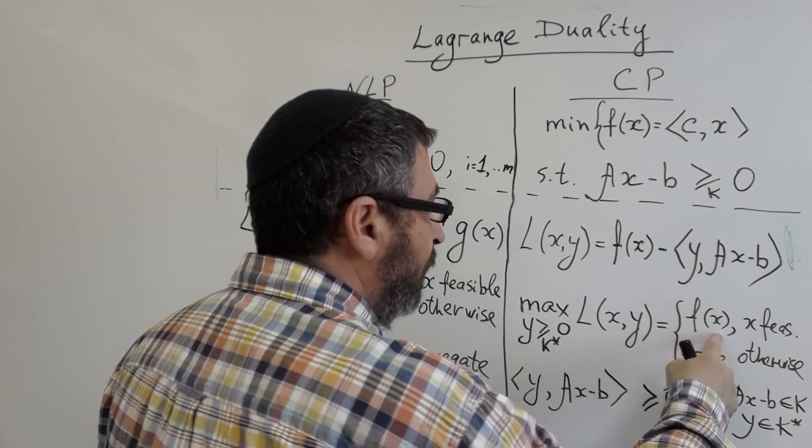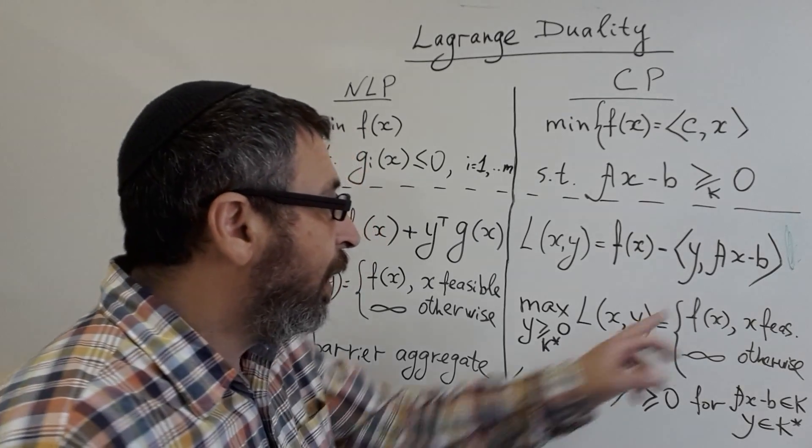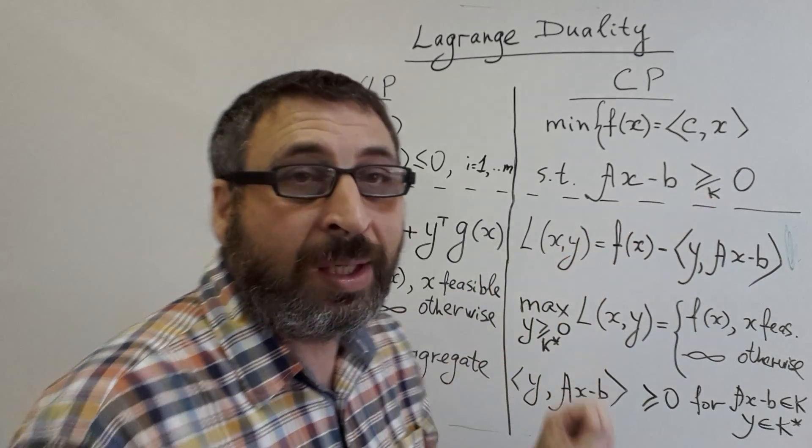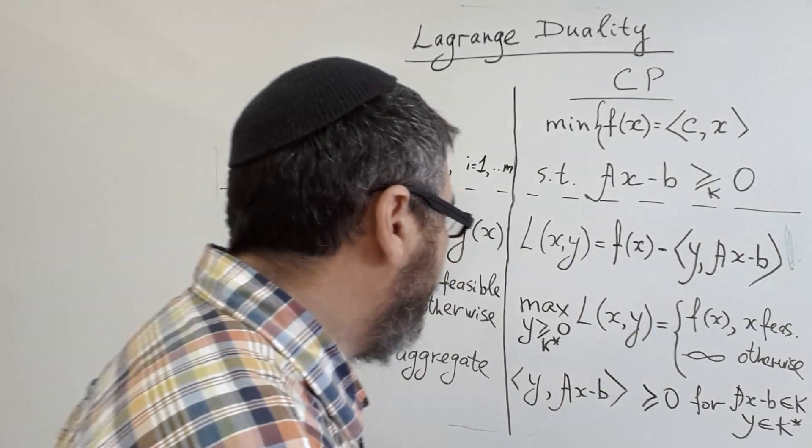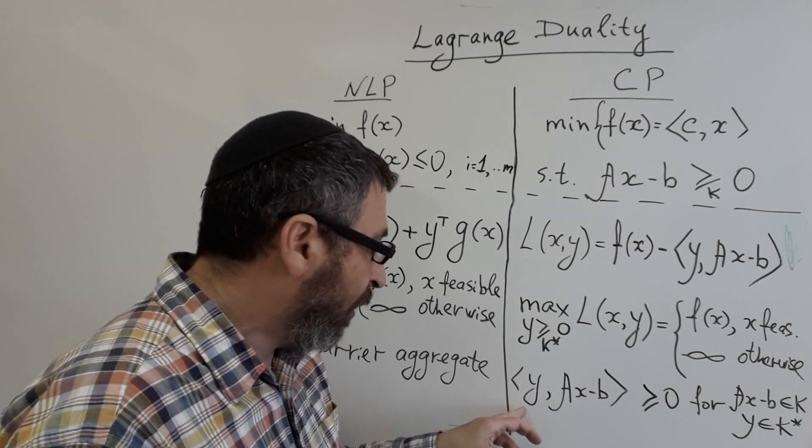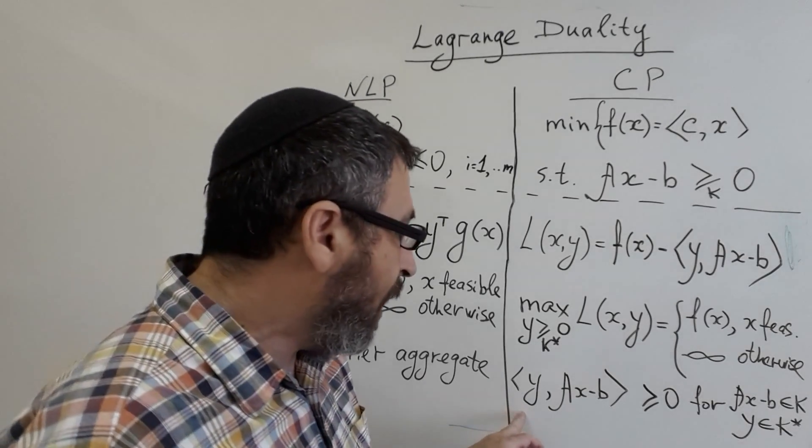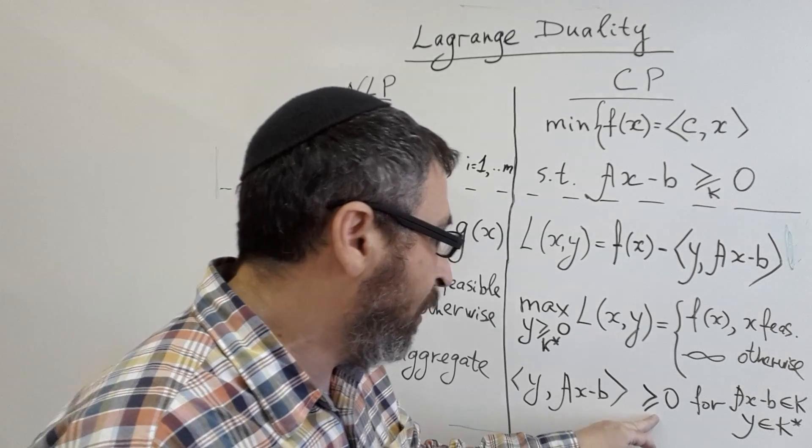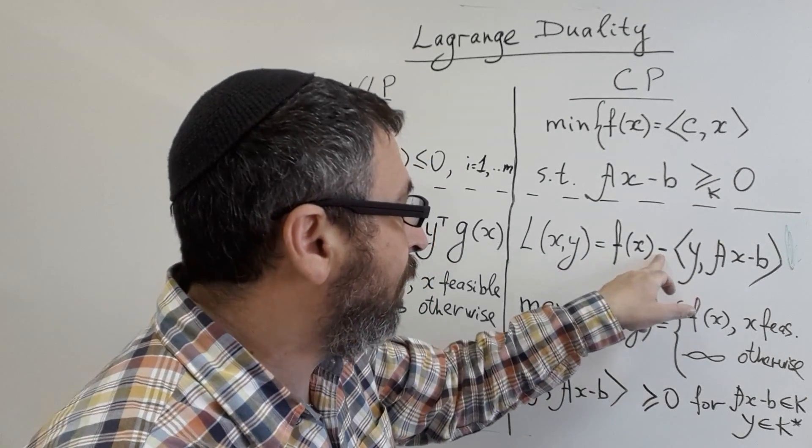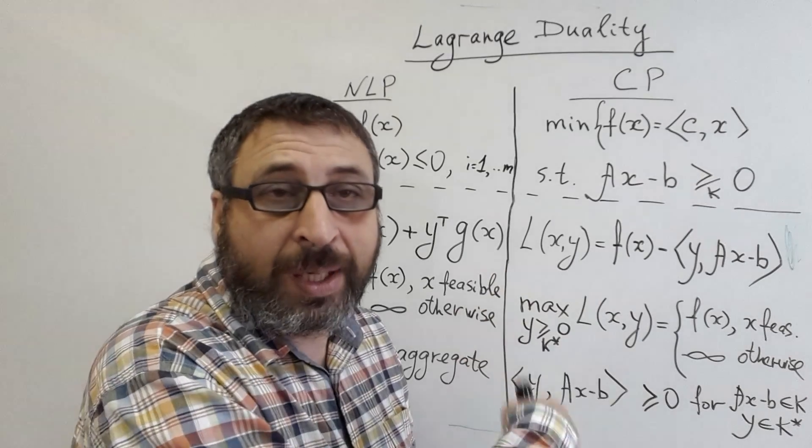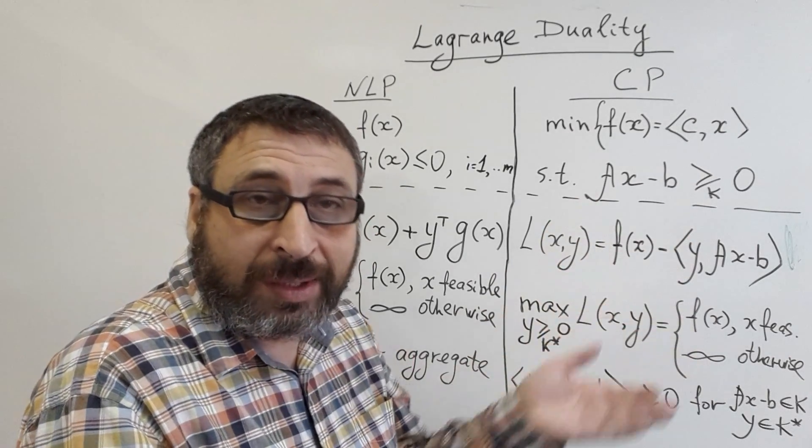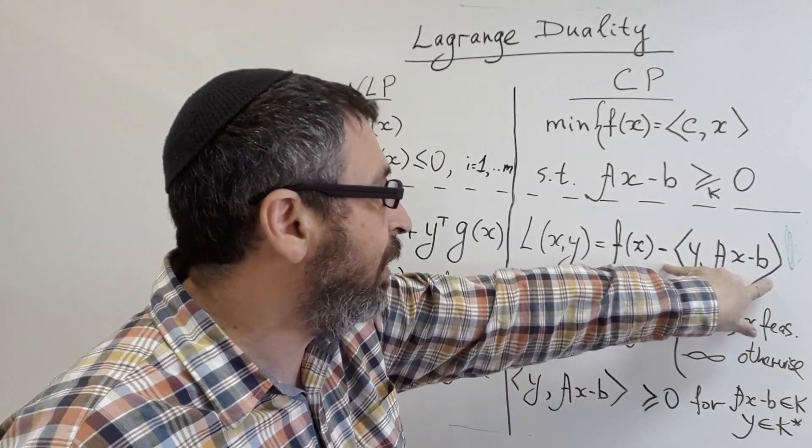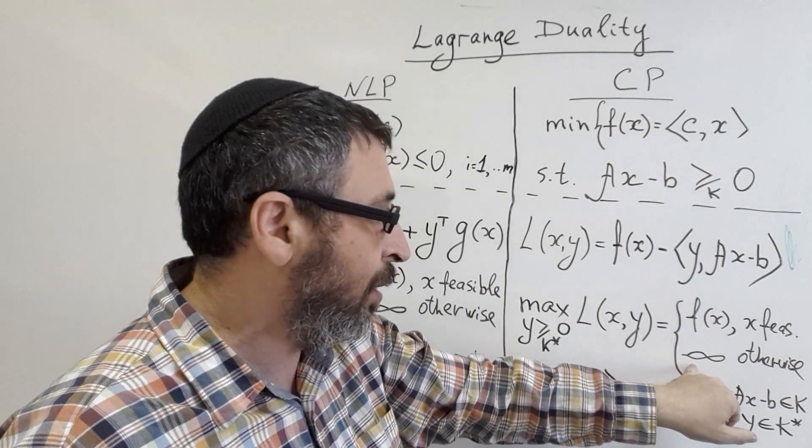On the contrary, if A X minus B doesn't belong to the primal cone, meaning that X is infeasible, then there will exist a vector Y from dual cone such that this inner product is negative. And if this inner product is negative, then with minus this term will be positive. And we can multiply this Y by any constant; by property of cone it will remain in the dual cone, and get this term with minus as large as possible. So that's why infinity here.